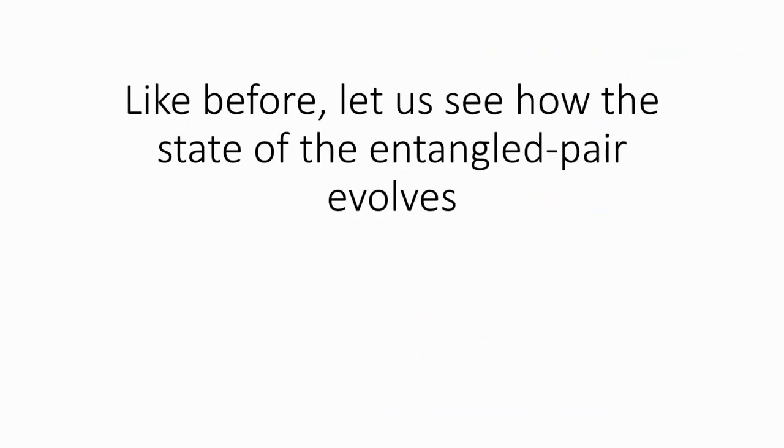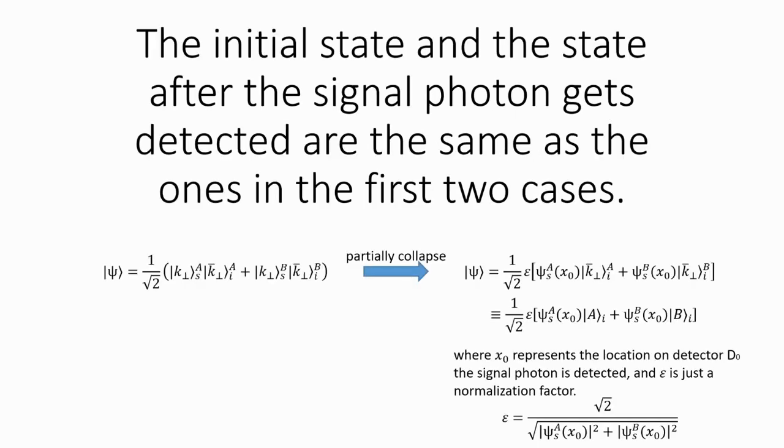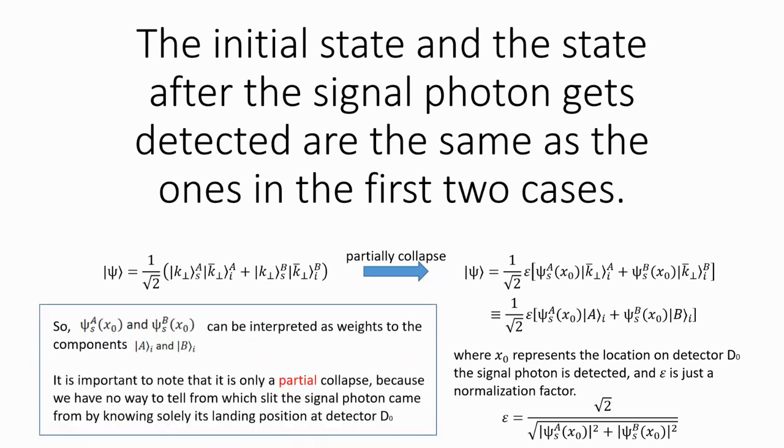Like before, let us see how the state of the entangled photons evolves. The initial state and the state after the signal photon gets detected are the same as the ones in the first two cases. Again, this is only a partial collapse, because we are still unable to tell from which slit the original photon went through just by knowing where the signal photon landed on D0.